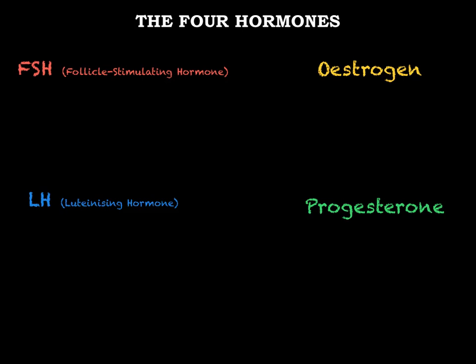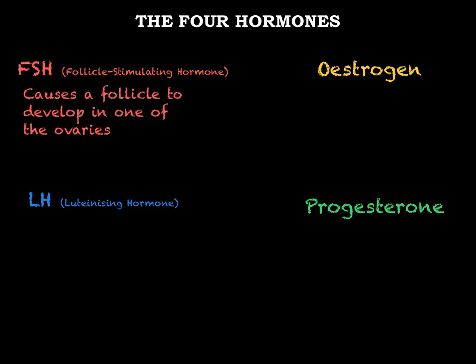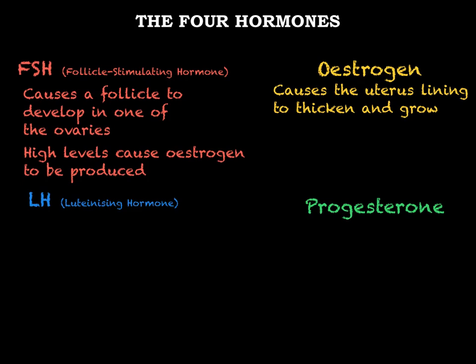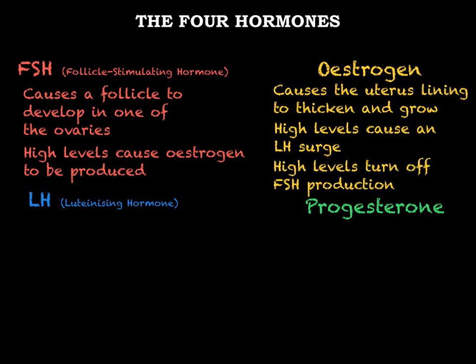In this video we have looked at four hormones: FSH (follicle-stimulating hormone), oestrogen, LH (luteinising hormone), and progesterone. FSH causes a follicle — an egg and its surrounding cells — to mature in one of the ovaries, and high levels of FSH also stimulate oestrogen production. Oestrogen causes the lining of the uterus to thicken and grow. A high level of oestrogen stimulates an LH surge whilst also turning off FSH production — this is an example of negative feedback. The LH surge stimulates ovulation at day 14, where the follicle ruptures and the egg is released.